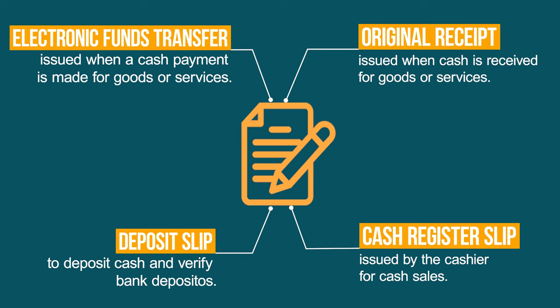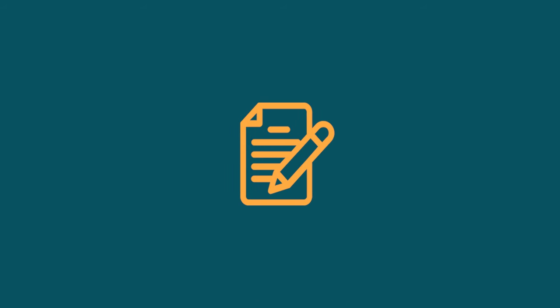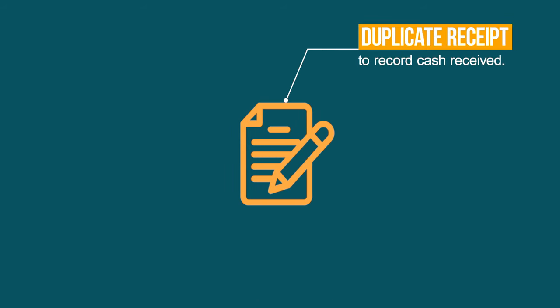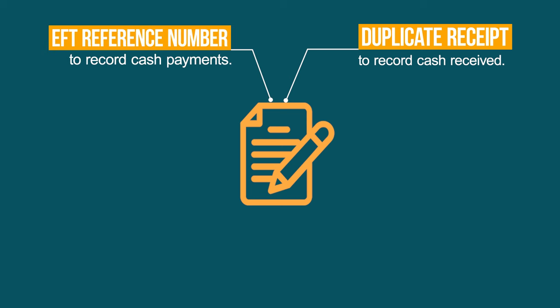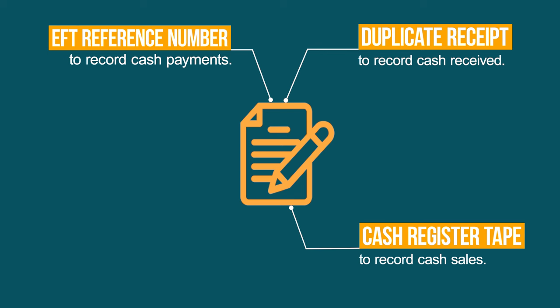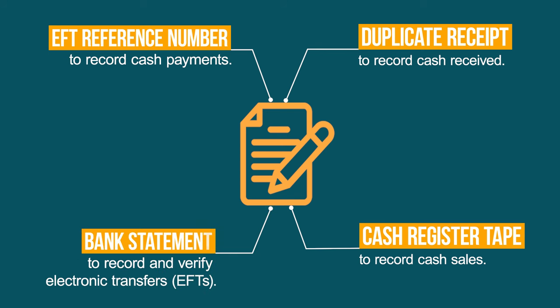Let's look at the source documents used to record the transactions in the books of the business. You can use a duplicate receipt, an EFT reference number, a cash register tape, or a bank statement. A duplicate receipt is to record cash received. An EFT reference is to record cash payments made electronically. A cash register tape is to record cash sales. A bank statement is to record and verify electronic transfers.